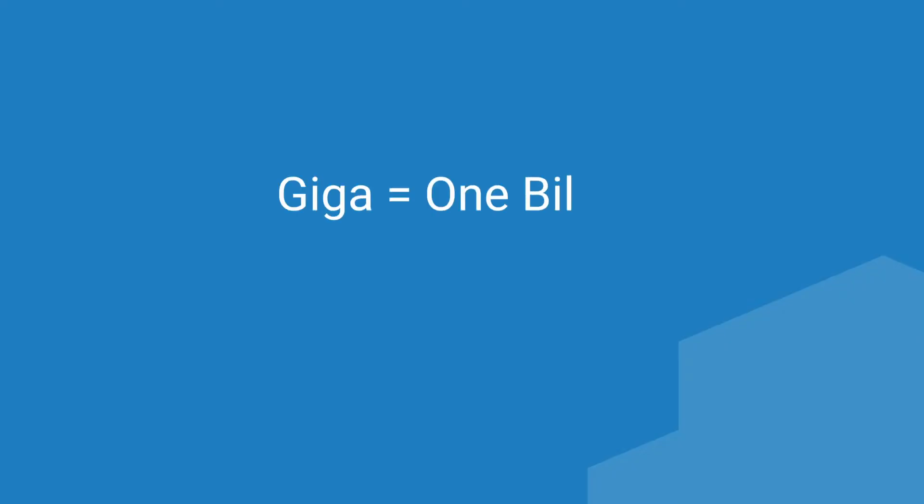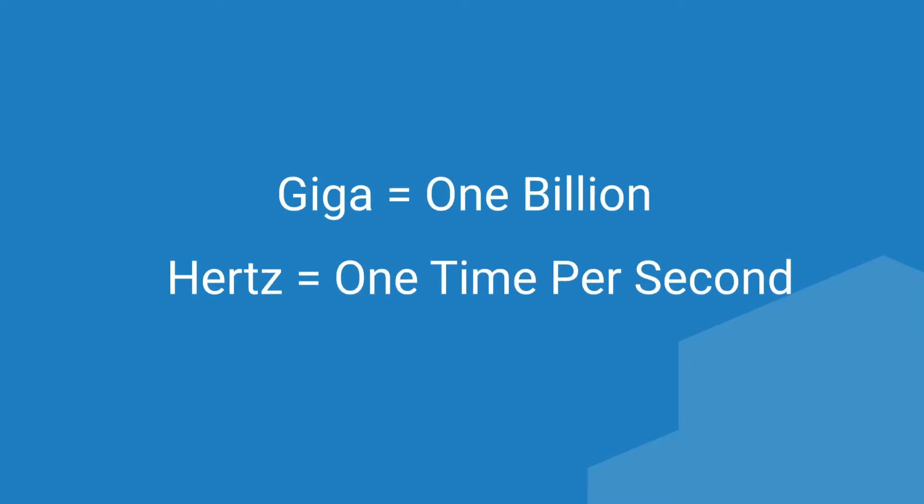Gigahertz is a measurement of frequency, or how often something happens, and is made up of two separate terms. Giga represents one billion, while hertz means one time or cycle per second. Jam them together and you get a word that means something is happening a billion times a second. In computing, this is often called the clock speed, and is one indication of how fast a processor is.